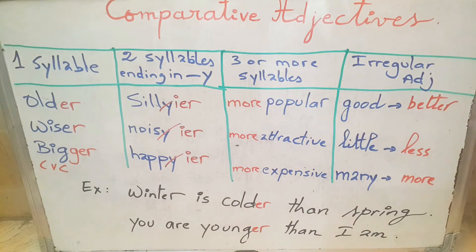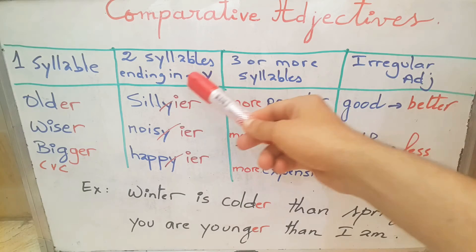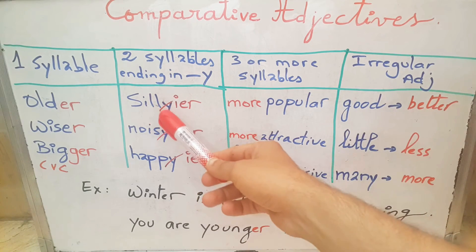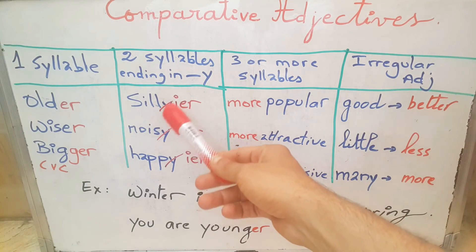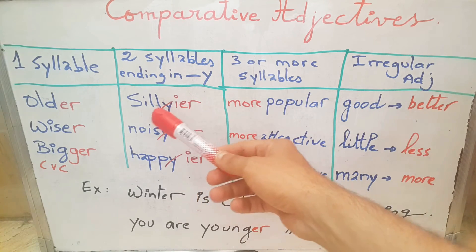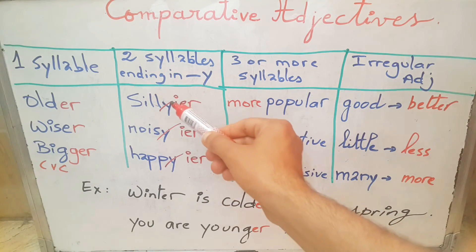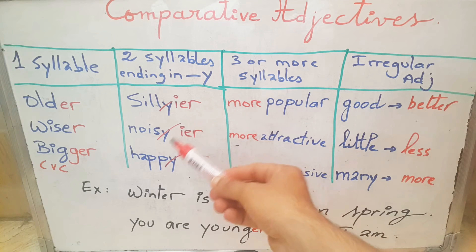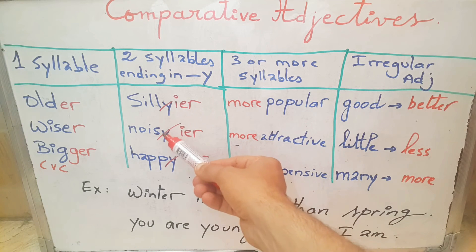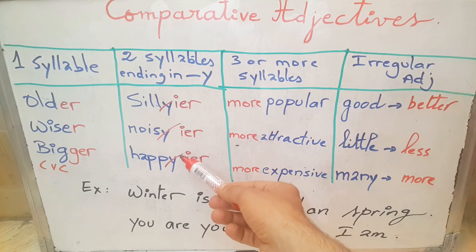Next is two-syllable adjectives ending in Y. For example, silly — we drop the Y and add IER: sillier. Noisy becomes noisier. Happy becomes happier.